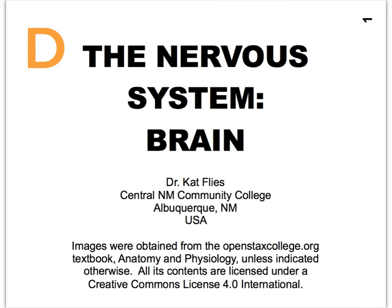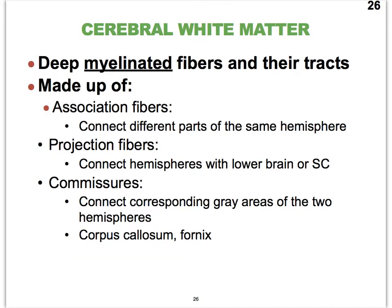Hi everybody, Dr. Kat Fleece from Central New Mexico Community College. We're moving on into the brain here and we're finally discussing the white matter. Most of the area of the cerebrum that sits deep to the cerebral cortex is made up of white matter — cerebral white matter. Don't forget that white matter has that color because it's rich in myelin, because of the myelinated axons in this nervous tissue.